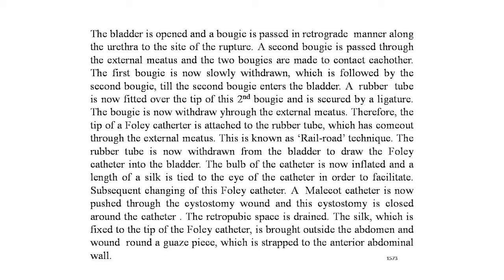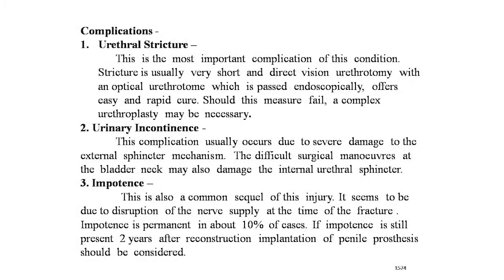The rubber tube is withdrawn from the bladder to draw the Foley catheter into the bladder. The bulb of the catheter is inflated and a length of silk is tied to the eye of the catheter to facilitate subsequent changes. A Malecot catheter is pushed through the cystostomy wound, which is then closed around the catheter. The retropubic space is drained, and the silk fixed to the tip of the Foley catheter is brought outside the abdomen and wound around a gauze piece strapped to the anterior abdominal wall.